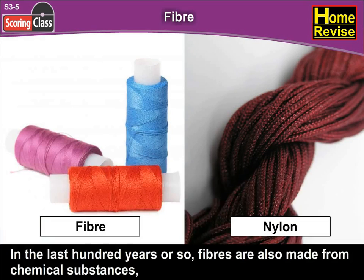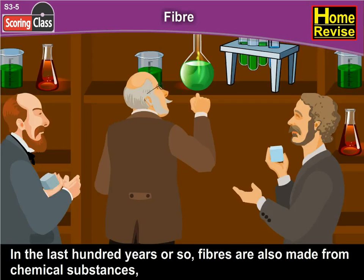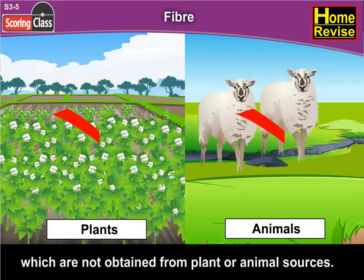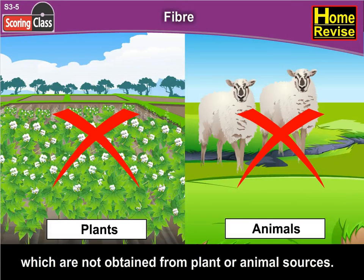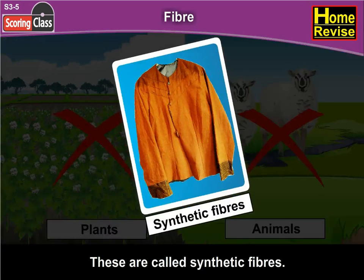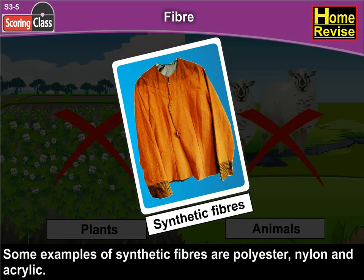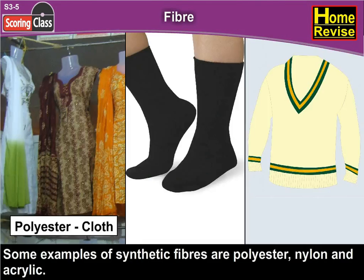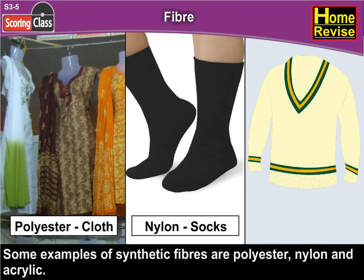In the last hundred years or so, fibres are also made from chemical substances which are not obtained from plant or animal sources. These are called synthetic fibres. Some examples of synthetic fibres are polyester, nylon and acrylic.